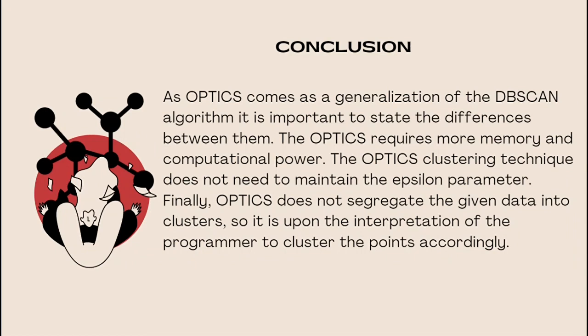Finally, for our conclusion, as OPTICS algorithm comes as a generalization of the DBSCAN algorithm, it is important to state some of its differences. First, OPTICS requires more memory and more computer power, as it maintains a priority queue to determine the next data point which is closest to the point currently being processed. Also, it does not need to maintain the epsilon parameter and is only given in the pseudocode to reduce the time taken compared to DBSCAN. Finally, it is important to understand that this technique does not segregate the given data into clusters. It merely produces a reachability distance plot, and it is upon the interpretation of the programmer to cluster the points accordingly.